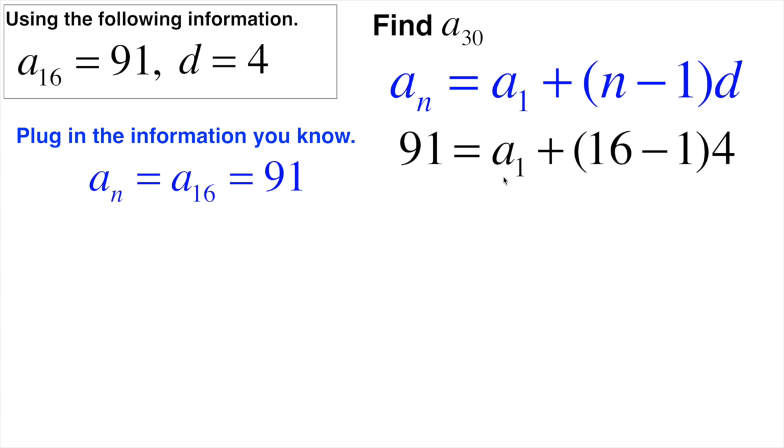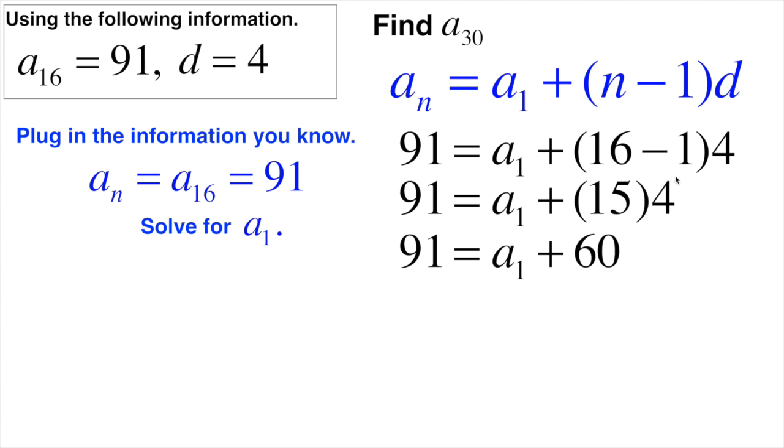So now in order to find my a₁ here, all I'm going to do is simplify what's on the far right-hand side here, get it all by itself essentially, but I need to simplify this first. So using order of operations, I have to do parentheses first. 16 minus 1 is 15. 15 times 4 would give me 60. Now in order to get a₁ all by itself, I'm going to subtract 60 from both sides. So I find out that a₁ equals 31.